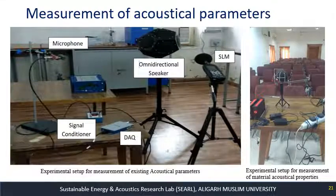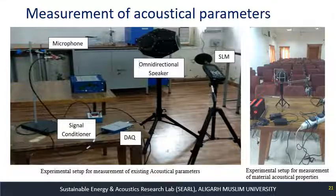The instruments used for measurement of acoustical parameters include a dual-dodecahedron speaker, sound level meter, microphones, and a data acquisition system. An in-situ absorption setup is particularly suited for these applications because it allows us to go directly into the building and measure the acoustical absorption values of materials as they actually are.